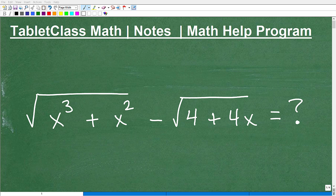Okay, let's see if you can do this problem here. So we have the square root of x cubed plus x squared minus the square root of 4 plus 4x. And what I'd like you to do is to simplify this problem. And it can be simplified.